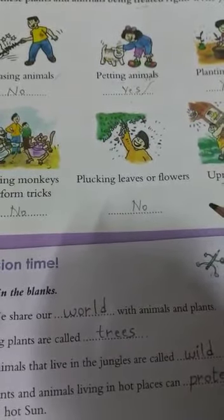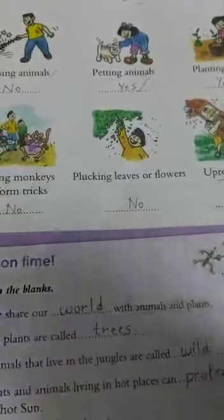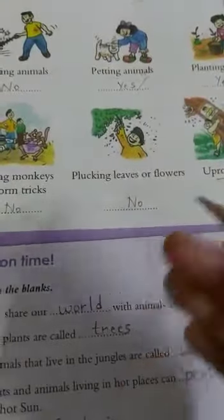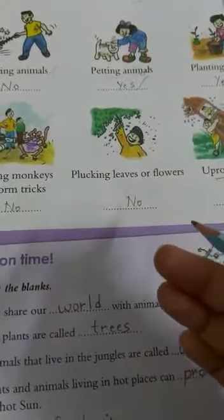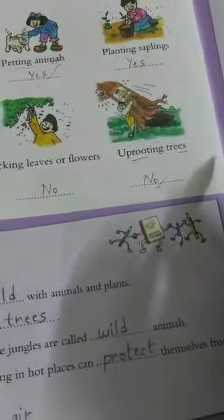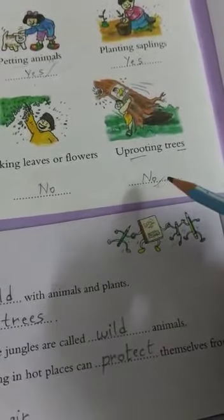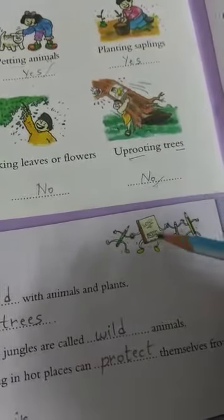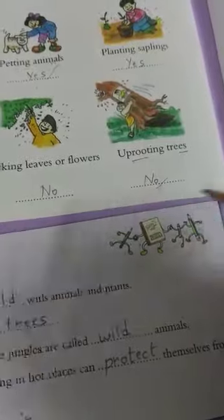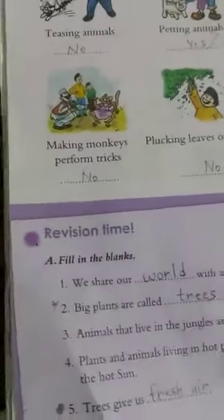We must not pluck the leaves or the flowers. We must instead plant more trees, so the answer is no. Uprooting trees for no reason is a bad thing — you are not treating the plants in the right way, so the answer is no. Now let's start the objectives.